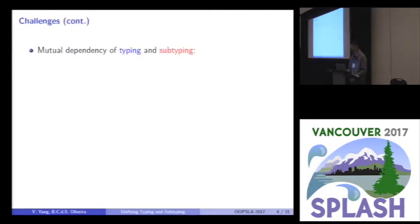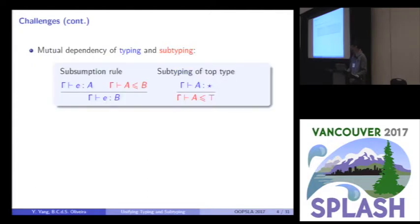Specifically speaking, we have two problems here. First, we have the mutual dependency of typing and subtyping relations. For example, we have two rules here in such systems. The left one is the subsumption rule. You can see that the conclusion is the typing relation, which is in blue. And you have this red subtyping relation in the premise, which means that the typing relation depends on the subtyping. And similarly, on the right part, which is the subtyping rule for top types, you have the subtyping relation depends on typing.